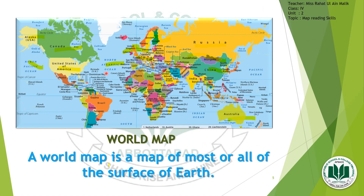We shall start from the definition of a map. A world map is a map of most or all of the surface of Earth. A map is a flat sheet where countries, cities, or the entire world can be located. Looking at the picture of the world map, you can see many countries — Russia, Australia, Canada — as well as the Arctic Circle, the Indian Ocean, and all the features of the world depicted here.